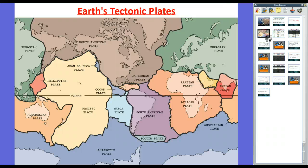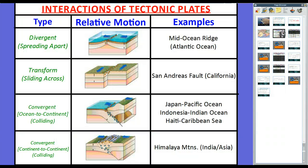There are 14 major tectonic plates — we live on the North American plate. From the lesson on the theory of plate tectonics, a handout showed the interactions: divergent where they spread apart, transform where they slide across each other, and convergent where they come together. Whether it's an ocean-to-continent collision or a continent-to-continent collision, we have different features.